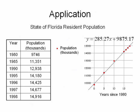Let's take a look at an application. In the table on the left, I have the years 1980 through 1998 and the corresponding population in thousands for Florida residents. In 1980 there were 9,746,000 Florida residents, and by 1998 there were 14,916,000. We're scaling the data, so I have to take each number and multiply it by 1,000 to get the actual number.